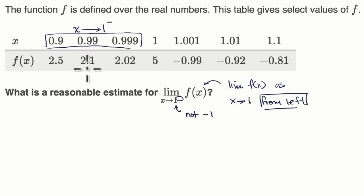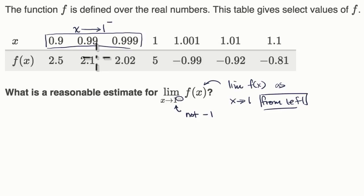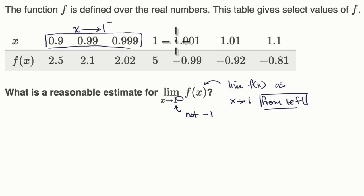A key realization here is if we're thinking about general limits, not just from one direction, then we might want to look at from the left and from the right. But they're asking us only from the left, so we should only be looking at these values right over here.